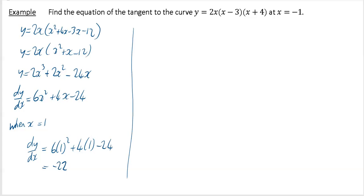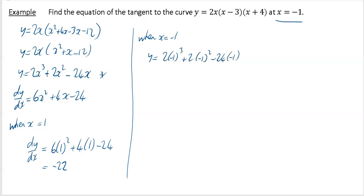So the story so far: we know our gradient for the tangent is minus 22. What we don't know is a corresponding y value. We know when our x value is 1, we don't know our corresponding y. So when x equals 1, y equals 2 times 1 cubed plus 2 times 1 squared minus 24 times 1. If you file that into your calculator, you will get 24. So I now know when x equals 1, y equals 24.